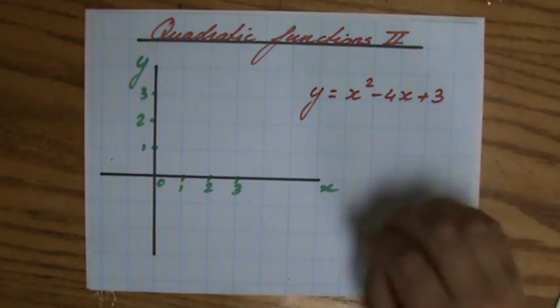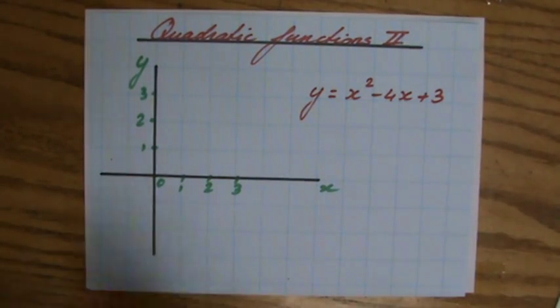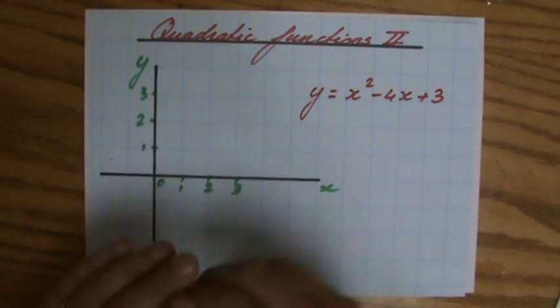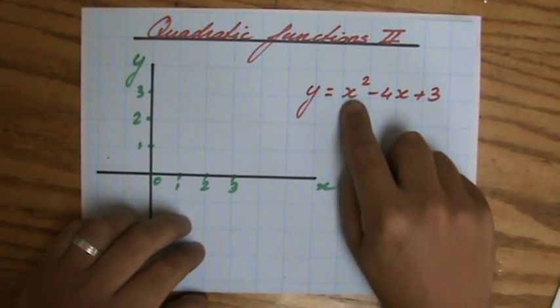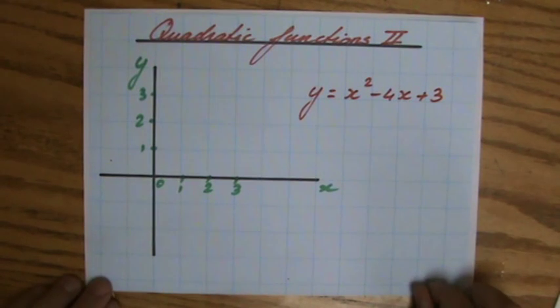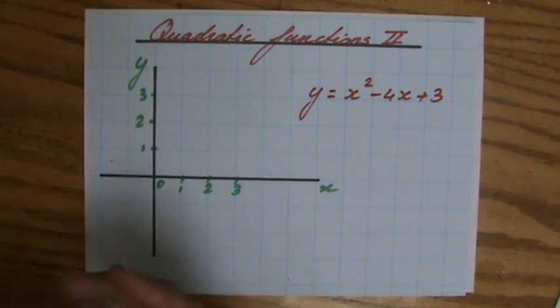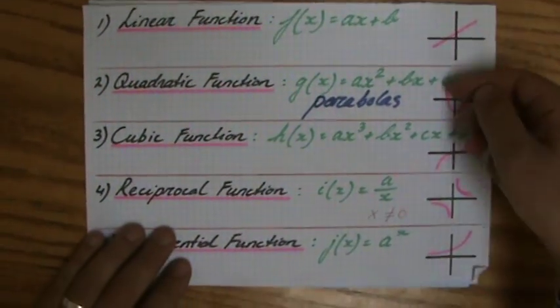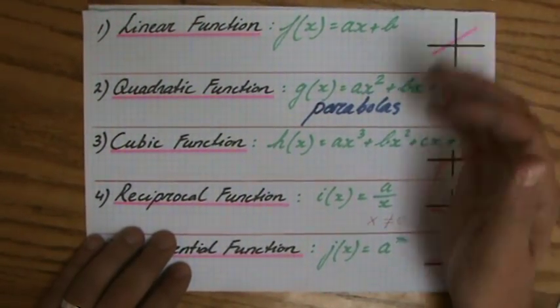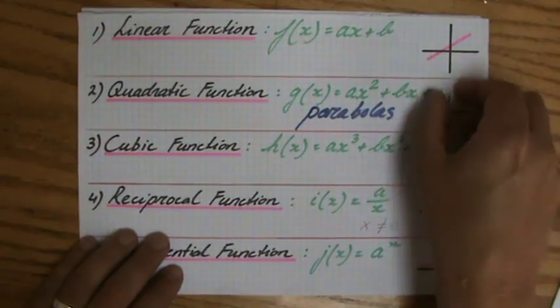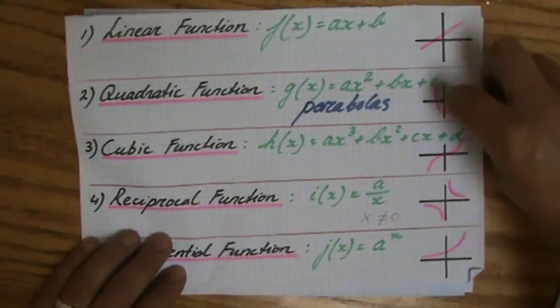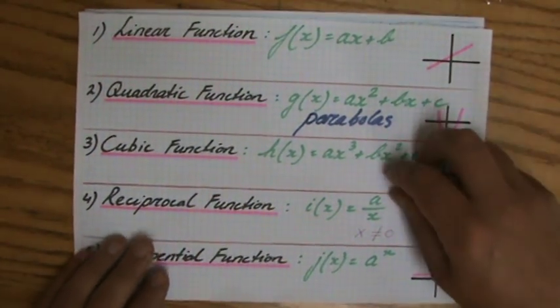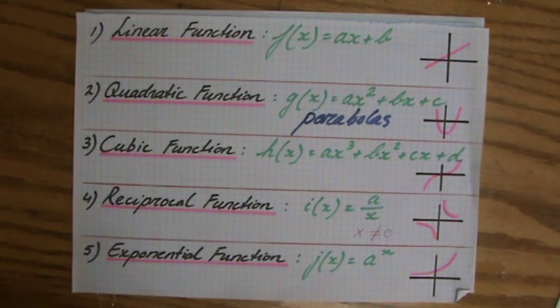We are still graphing quadratic functions, and we notice that if we graph a quadratic function, that is a function where the highest power of x is a 2, a square, we get a parabola. A parabola is a beautiful symmetrical curve with a line of symmetry in the middle. Now a parabola can be anywhere, it could even be upside down, it could be a mountain, but it's always going to be symmetrical around a particular mirror line.